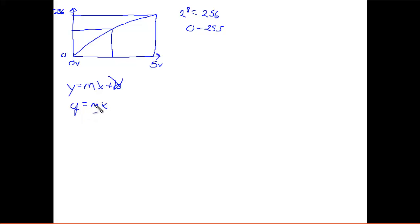And remember our slope of the line is our rise over our run. So y is going to be equal to 256 divided by 5 times x.